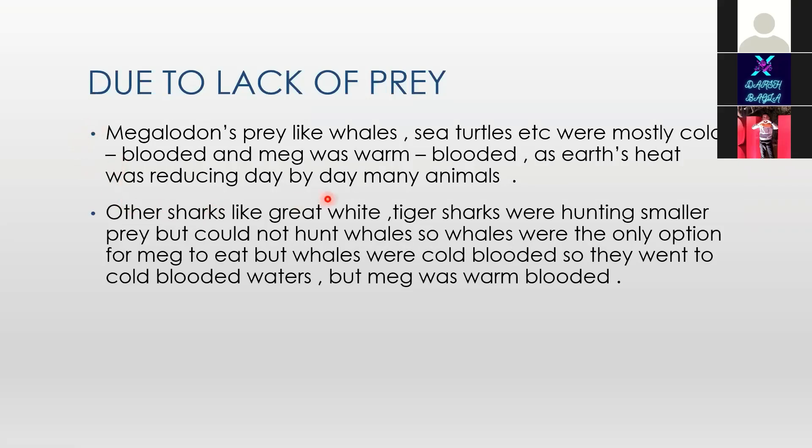Lack of prey: Megalodon's prey — like whales and sea turtles — were mostly cold-blooded, while Meg was warm-blooded. As the earth's temperature was reducing day by day, other sharks like great white and tiger sharks were hunting smaller prey but not whales. So whales were the only option for Meg to eat, but whales migrated to colder waters since they were cold-blooded, while Meg could not follow.